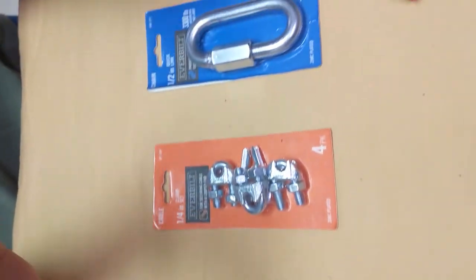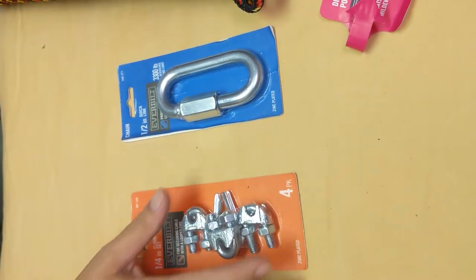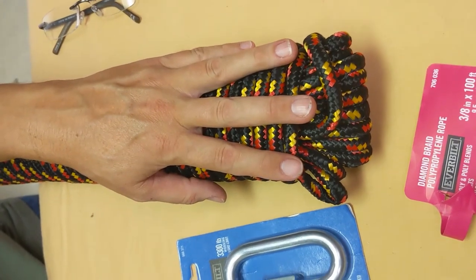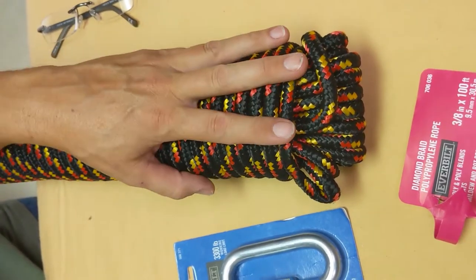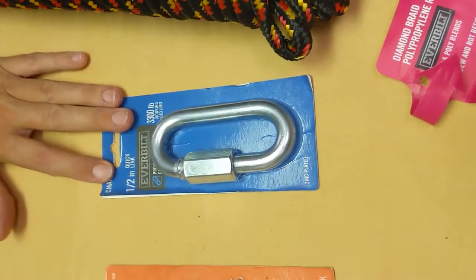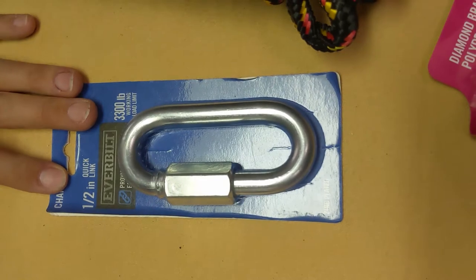We're going to use the Everbuilt products. We have an Everbuilt polypropylene rope that can hold 224 pounds. Then we have the Everbuilt 1 1⁄2 inch link.